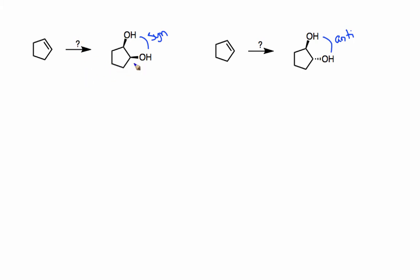The first example is pretty easy. When you want a syn diol, you just need to do a dihydroxylation. So what we'll use for this case is osmium tetraoxide, OsO4, and hydrogen peroxide. And basically, this osmium tetraoxide is just a catalyst, and as it gets used, it gets reoxidized by the hydrogen peroxide and regenerated.